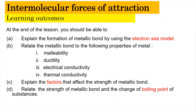In this video, we're going to learn about the explanation for the formation of the metallic bond by using the electron sea model. Next, we're going to relate the metallic bond to the following properties of the metal, which includes malleability, ductility, electrical conductivity, as well as thermal conductivity. We're also going to explain the factors that affect the strength of the metallic bond.